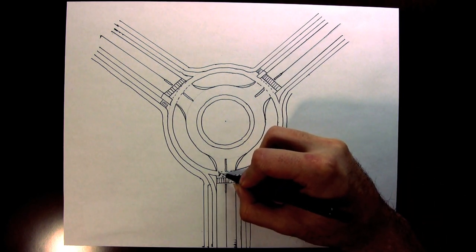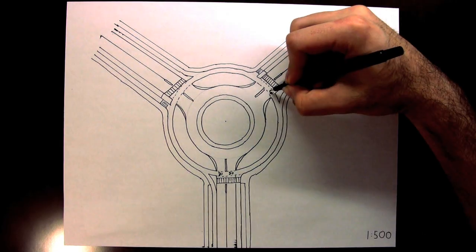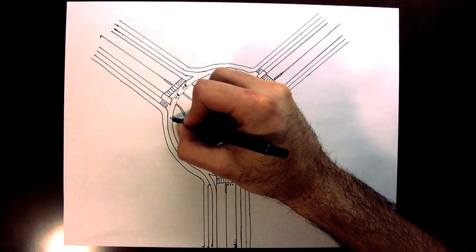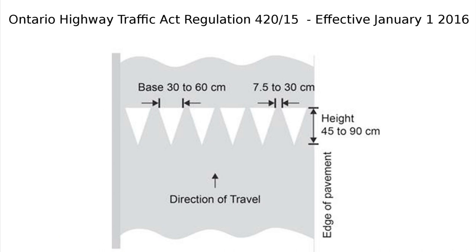In Ontario, we've recently started using shark's teeth for yield markings. These triangular markings are the standard in the Netherlands and have been for a long time. There are three yield points for vehicles using the roundabout.